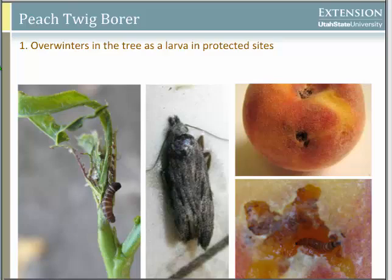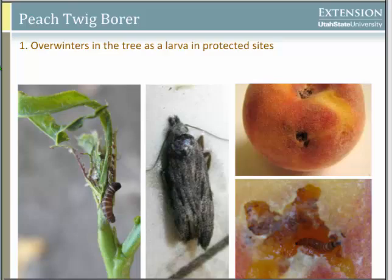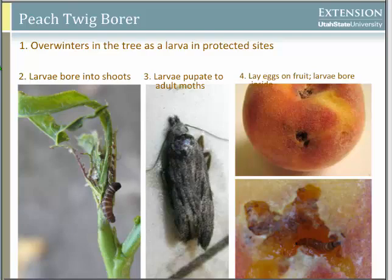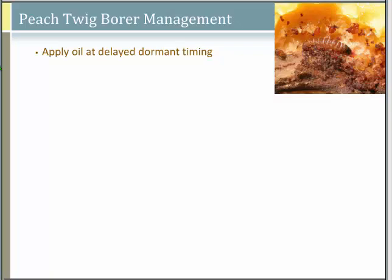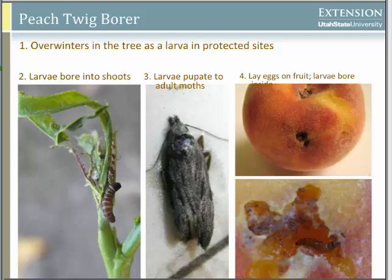The larvae pupate to an adult moth around mid to late May. The moth lays eggs either on the fruit or on the shoots. Later in the season, as shoots harden off, it targets the ripening peaches. Unlike codling moth, which is found throughout Utah, peach twig borer is more of a localized pest — some areas don't deal with it at all, while others really have to manage it.